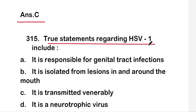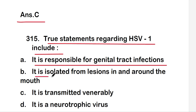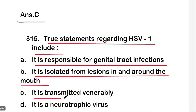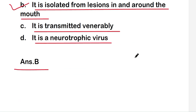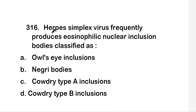The next question is: true statements regarding HSV-1 include — it is responsible for genital tract infection; it is isolated from lesions in and around the mouth; it is transmitted venereally; or it is a neurotropic virus? The right answer is option B — HSV-1 is isolated from lesions in and around the mouth.